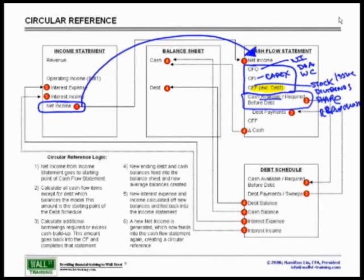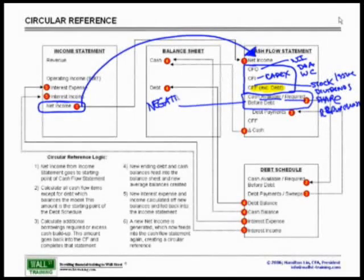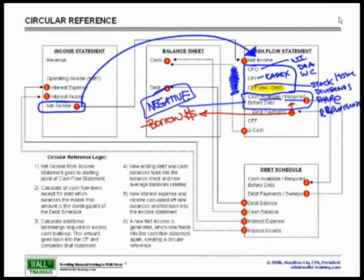If this cash available or required before debt, which again incorporates all cash flow related activities of the entire company except for debt-related items, if this is a negative number, the CFO of that company has but one option only, and that is to borrow money. They will borrow money to fund any shortfall, that is, any cash that is required. They will have to borrow to make this up; otherwise, they will have to go bankrupt and they will not be able to meet their obligations.